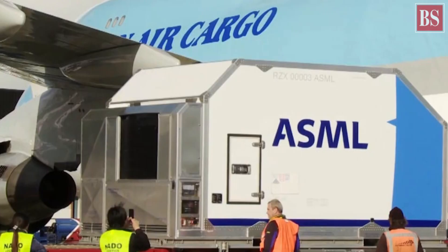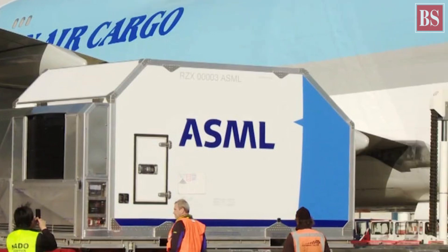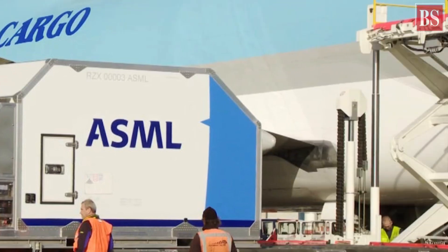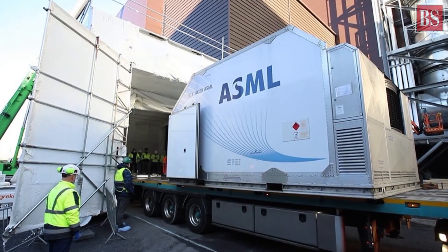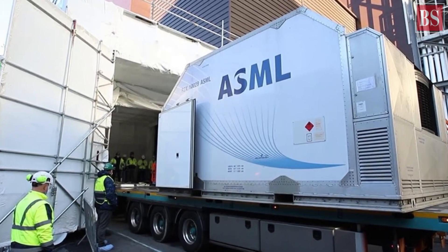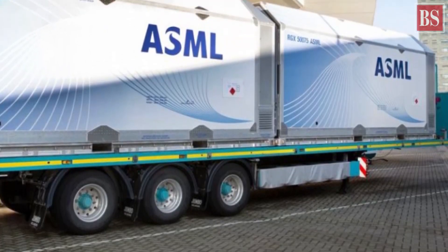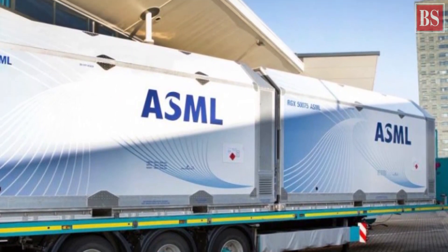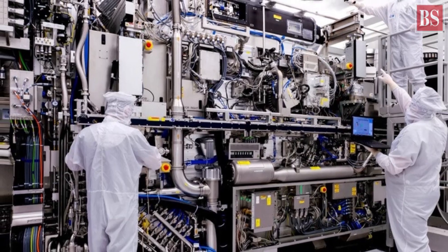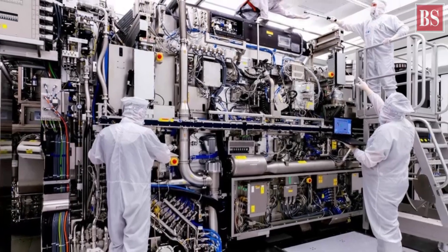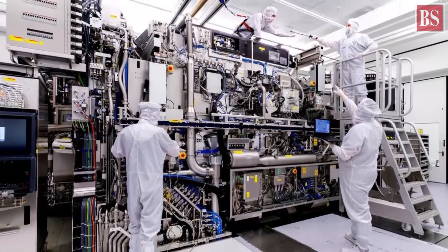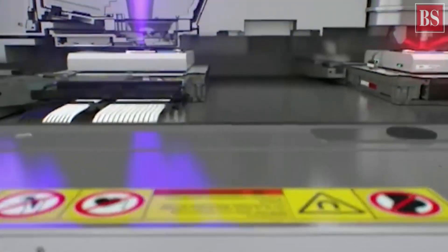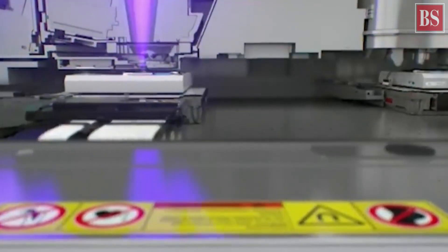Delivering just one of these takes three Boeing 747 cargo planes, 40 freight containers and 20 trucks. The bus-sized machine comprises 100,000 parts, weighs nearly 200 tons and costs around $150 million. A cutting-edge chip plant needs 9 to 18 of these machines, which are one of the biggest capital costs for chip makers.